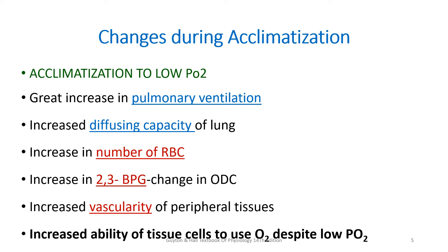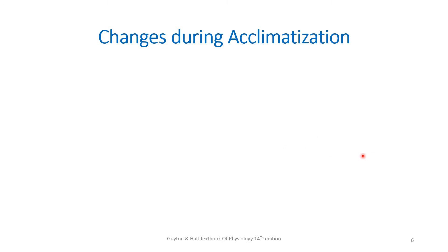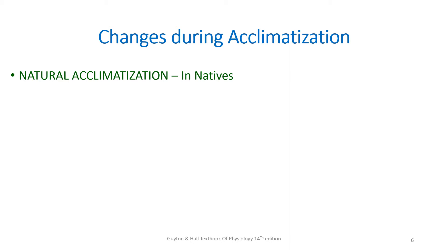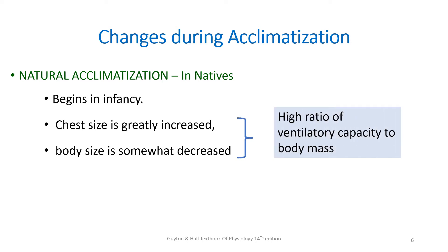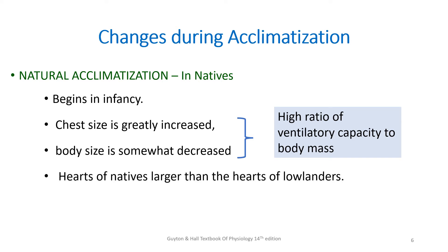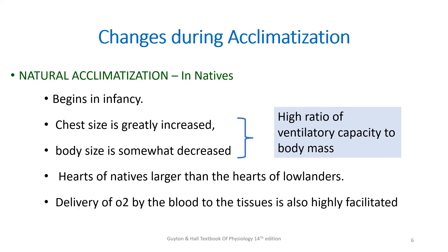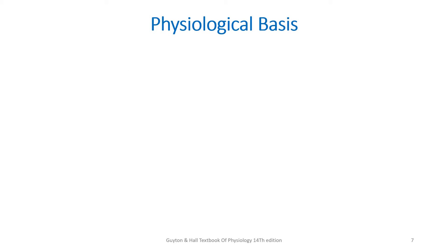There is one more type of acclimatization called natural acclimatization, which occurs in natives — those people who are born at high altitude. For them, acclimatization begins in infancy. In general, their chest size will be greatly increased and their body size will be somewhat decreased. This results in a higher ratio of ventilatory capacity to body mass. Their hearts will also be much larger than lowlanders, which allows their heart to pump more blood more efficiently, and the delivery of oxygen by the blood to the tissues is also highly facilitated.